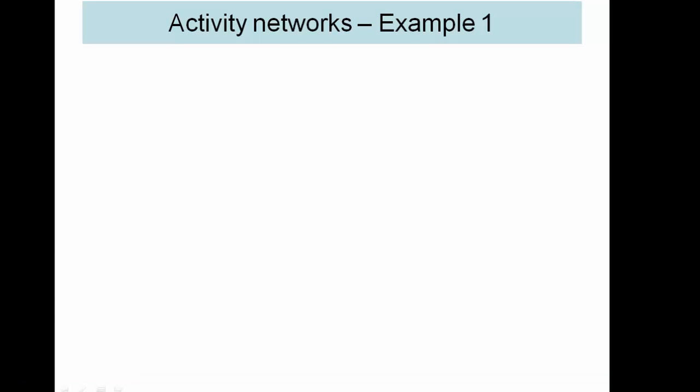The next topic in AQA decision 2 is called critical path analysis. We're going to start off by looking at how we set up activity networks.